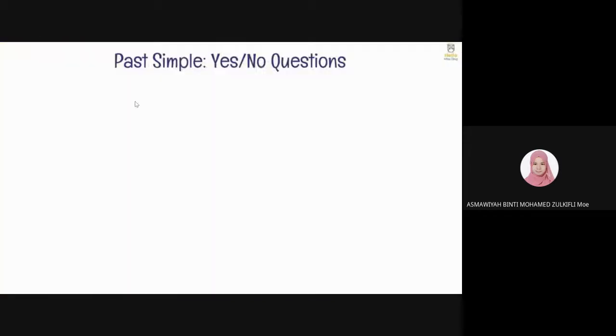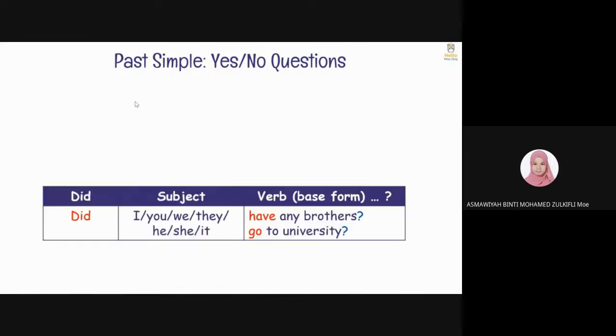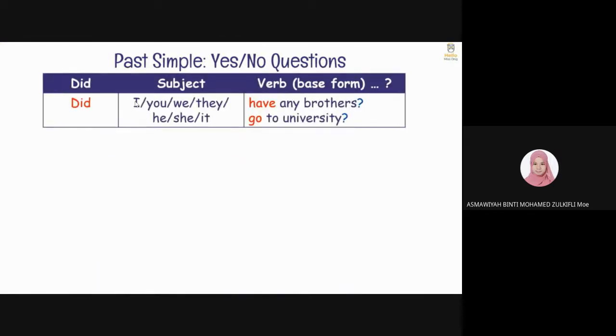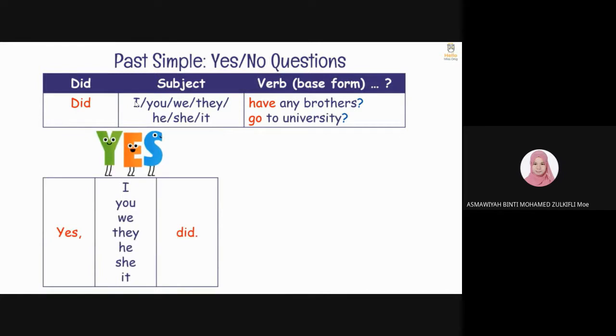To summarize, we form past simple yes-no questions like this. Did, subject, then verb in the base form. For example, did you have any brothers? Did he go to university? To answer yes-no questions, we use short answers. When the answer is yes, we say. And when the answer is no, we say.